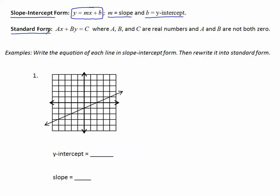Standard form is Ax plus By equals C, where A, B, and C are real numbers and A and B are not both zero. Also, they are not fractions, so we're not going to have any denominators in standard form.